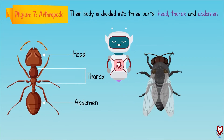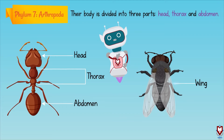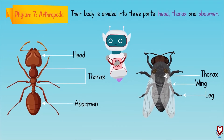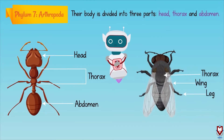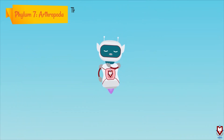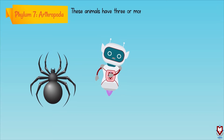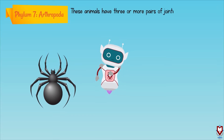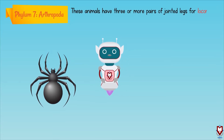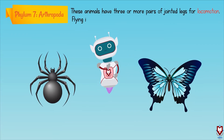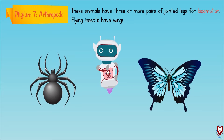The wings and legs of these animals are attached to the thorax. These animals have three or more pairs of jointed legs for locomotion, and flying insects have wings.